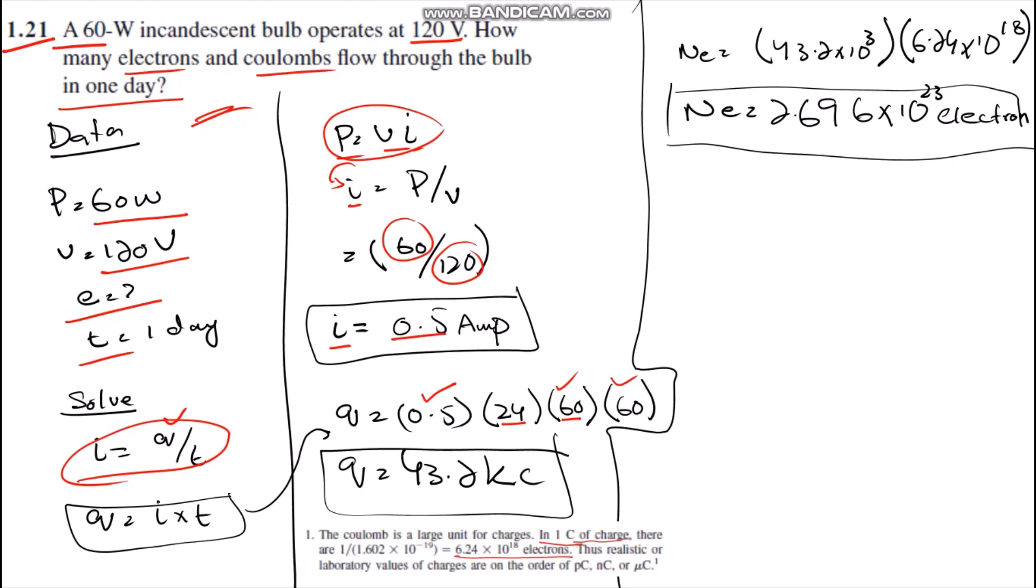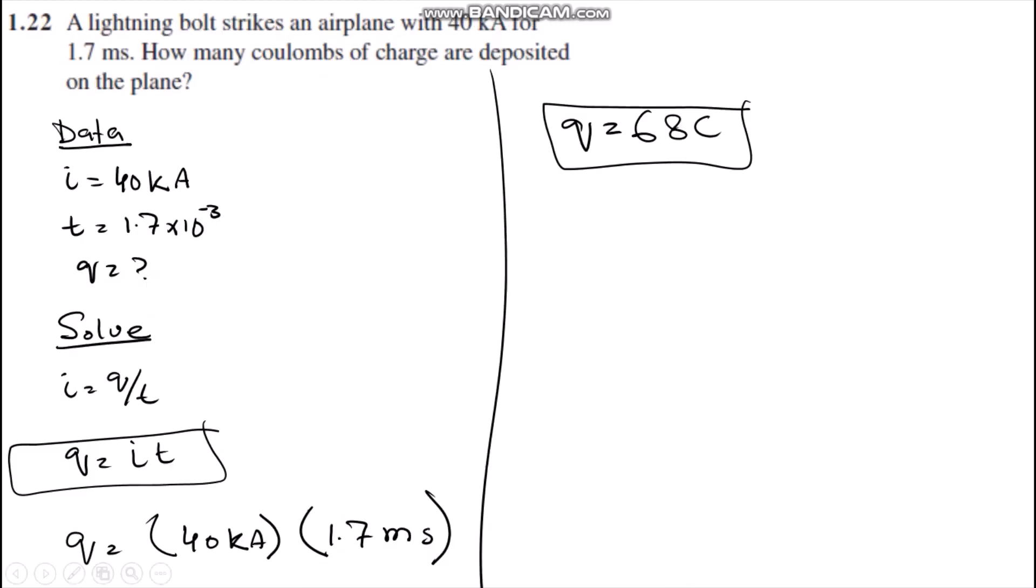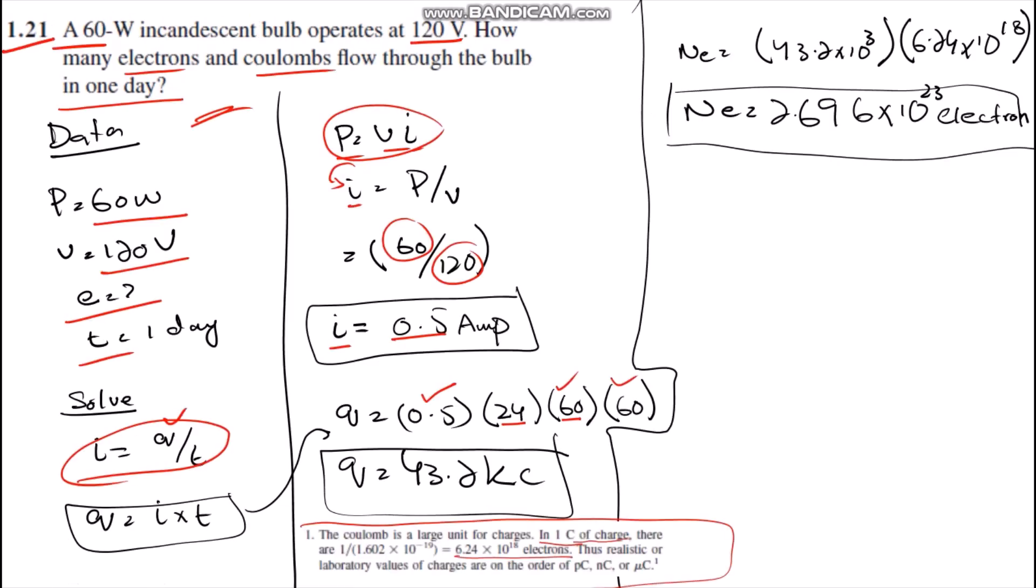We know that according to a statement which we have got from the book Fundamentals of Electric Circuits, one coulomb contains 6.24 multiplied by 10^18 electrons, which we have studied in the theory lectures.